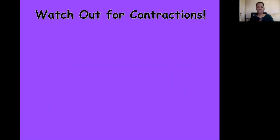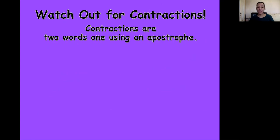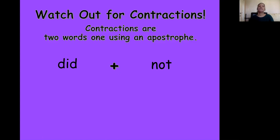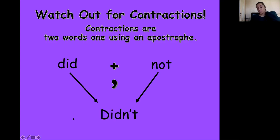Today you're also going to be watching out for contractions. Contractions are when two words become one using an apostrophe. So we have two words — did not — and they can become one using an apostrophe. This here is an apostrophe; it's just a little tick at the top. Didn't — you put the two words together, and the apostrophe is replacing the O. So you write: d-i-d, n, apostrophe, t. Didn't, did not.